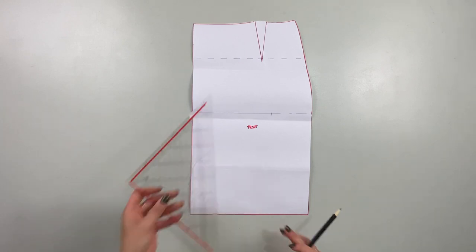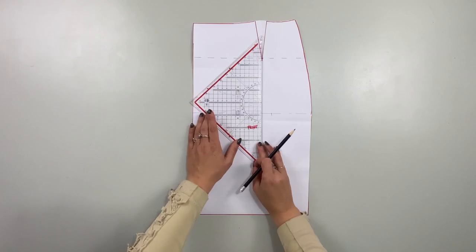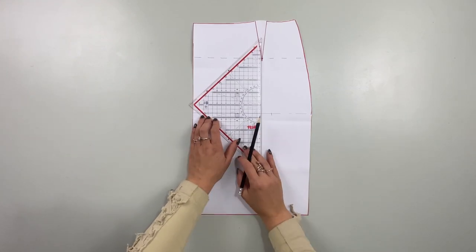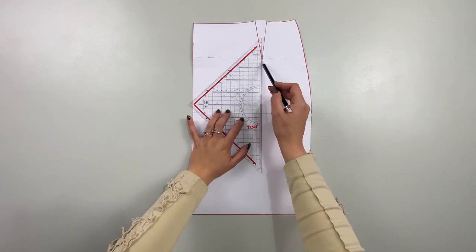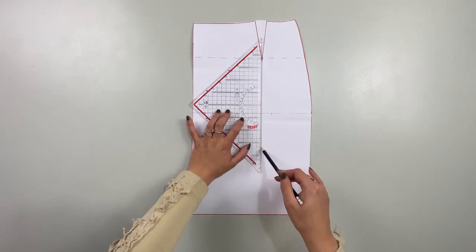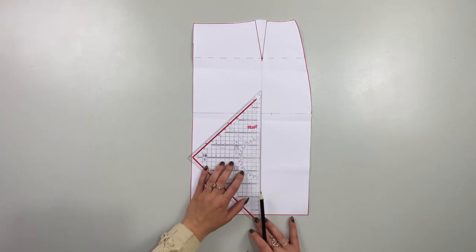Through the extra seam we will get rid of the dart at the front and gain the opportunity to have two slits on the hemline of the skirt. Just follow me on this. Draw a vertical line from the end of the dart all the way down to the hemline.